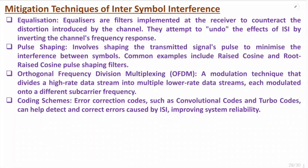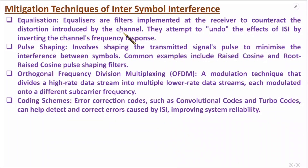Now let me discuss mitigation techniques of inter-symbol interference. The first technique is equalization, where we use equalizer filters implemented at the receiver side to counteract the distortion introduced by the channel. They attempt to undo the effect of ISI by inverting the channel frequency response.